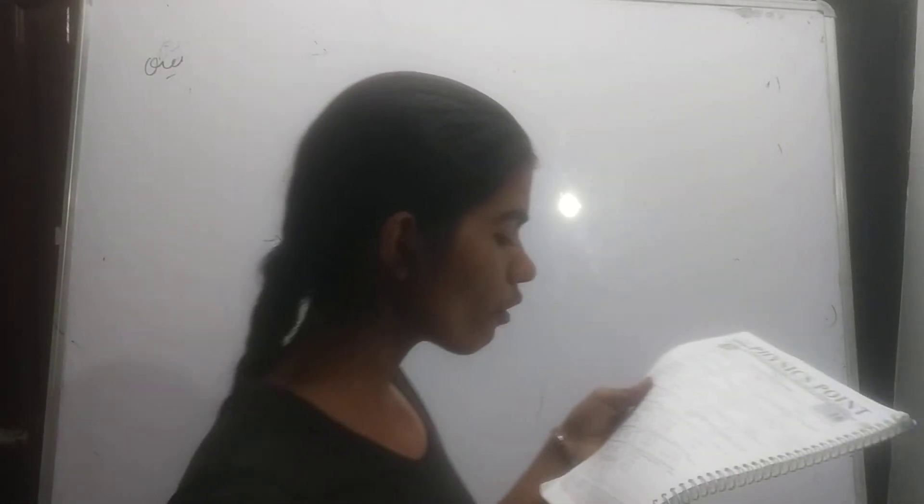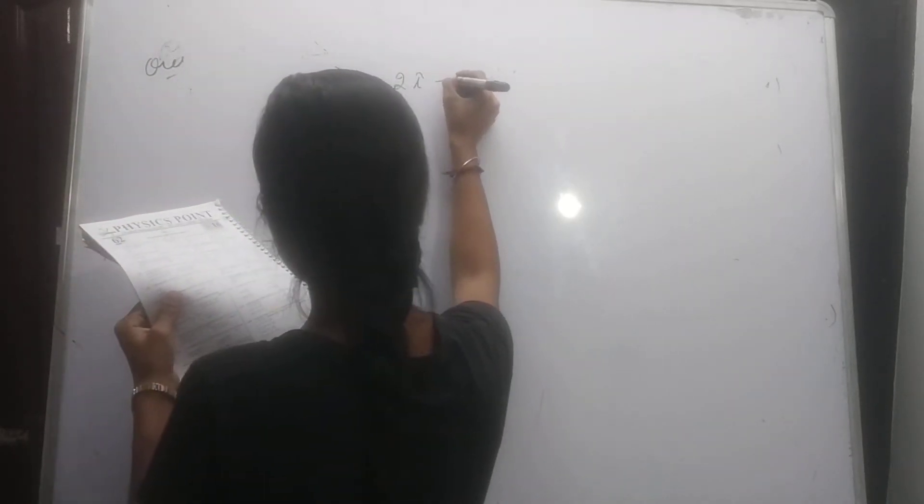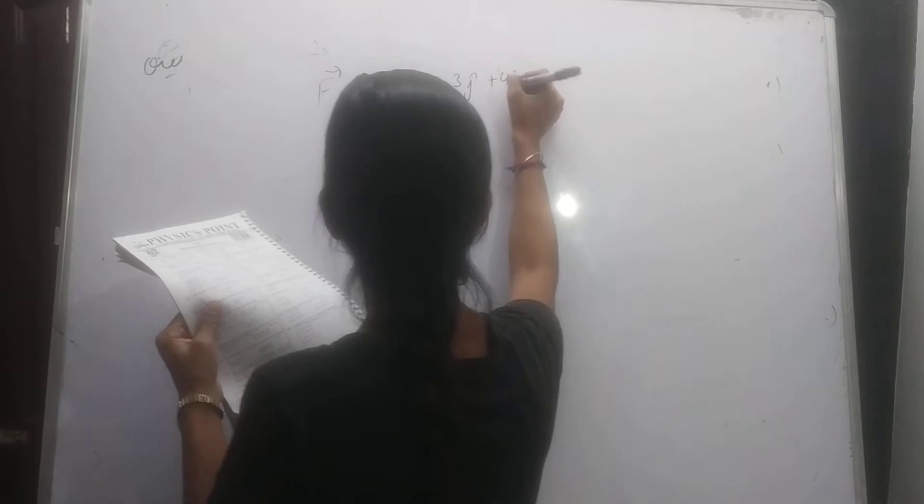Next question is the torque of force. Force F is equal to 2i cap minus 3j cap plus 4k cap.